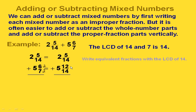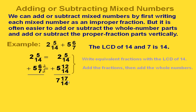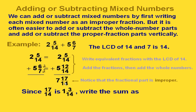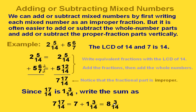Now we have our fractional parts written with a common denominator. Writing in vertical form, we add the whole number parts and add the fractional parts. If we add 5 fourteenths and 12 fourteenths, that gives us 17 fourteenths, and 2 plus 5 gives us 7. We're not quite done because 17 fourteenths is an improper fraction. We rewrite that as 1 and 3 fourteenths. Then we add our whole number 7 and the mixed number 1 and 3 fourteenths, adding the whole numbers to get 8, giving us 8 and 3 fourteenths. We want to make sure our fractional part is a proper fraction.